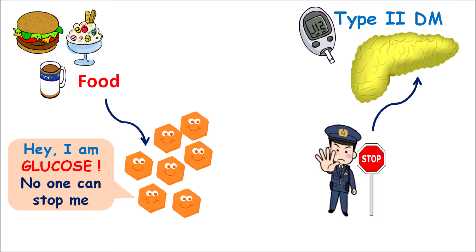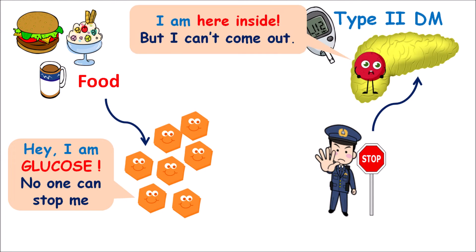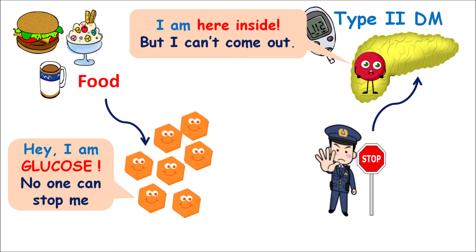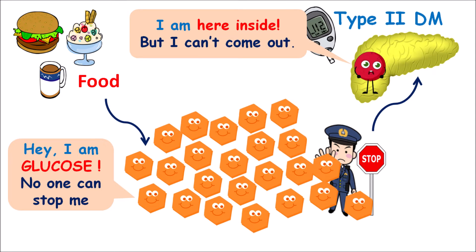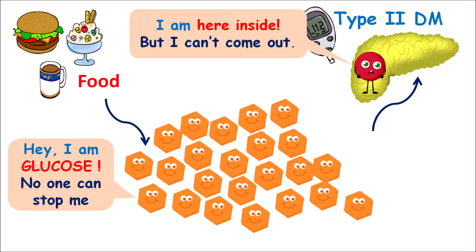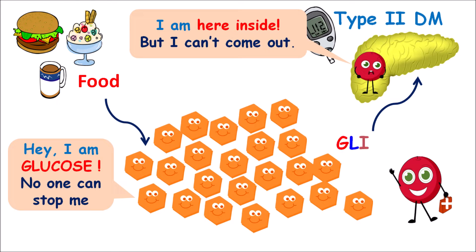In patients with type 2 diabetes mellitus, insulin is present within the pancreas but cannot be released properly, or some resistance can be developed towards the action of insulin. In such conditions, the glucose levels within the blood can be excessively increased, resulting in hyperglycemia. In these patients, insulin secretion is somewhat reduced along with development of insulin resistance. In such patients, we can give the drug glimepiride.